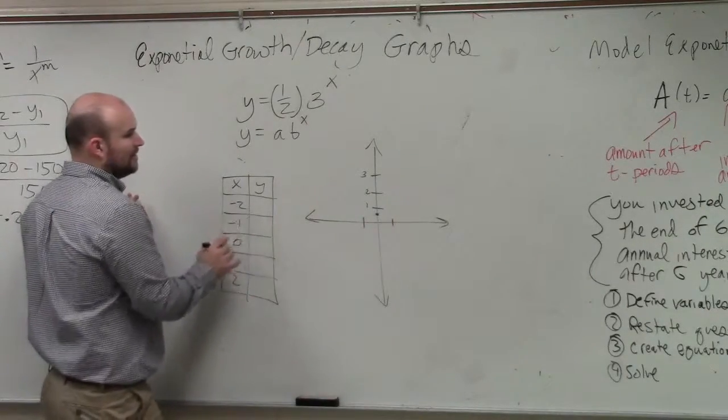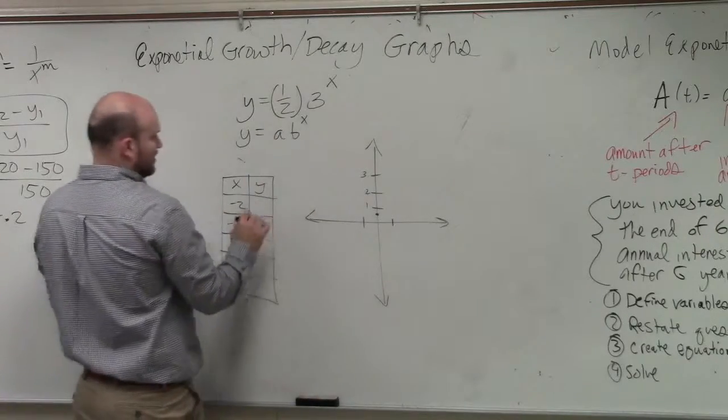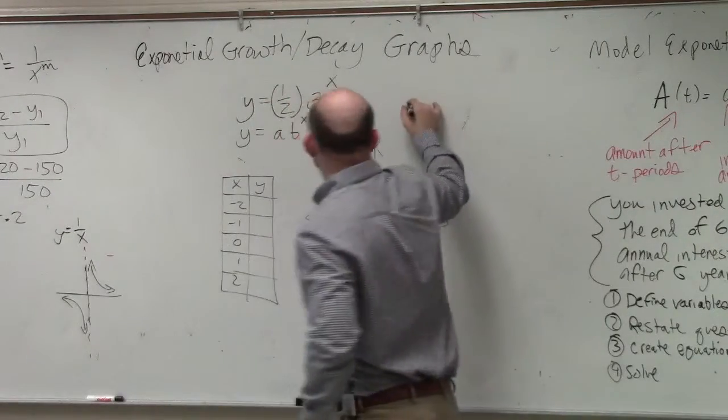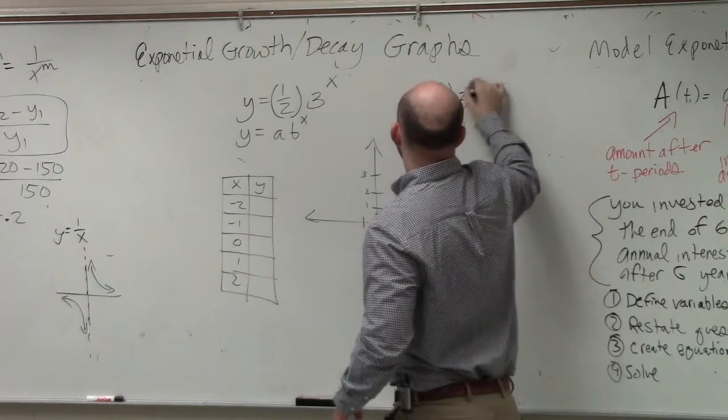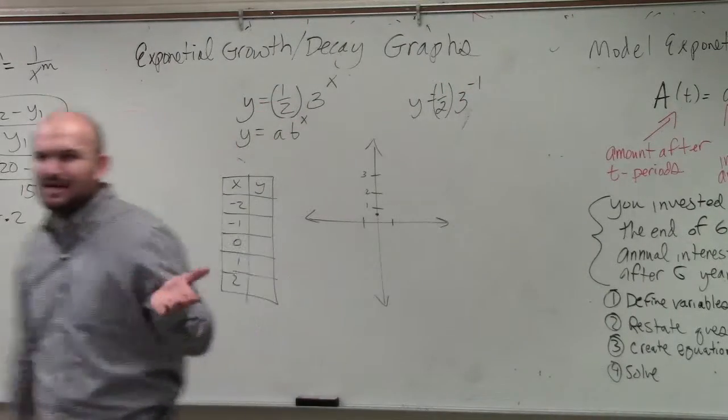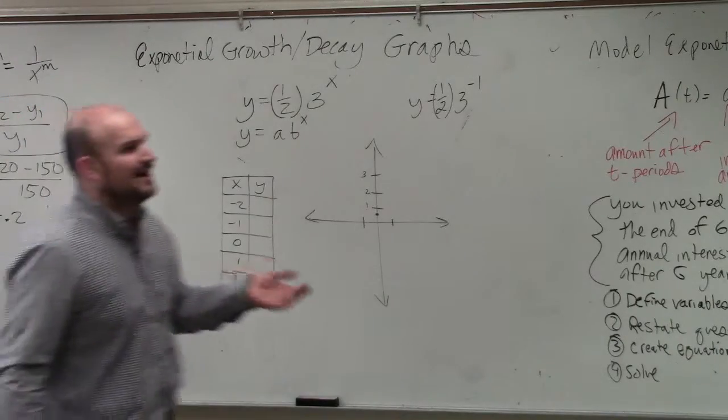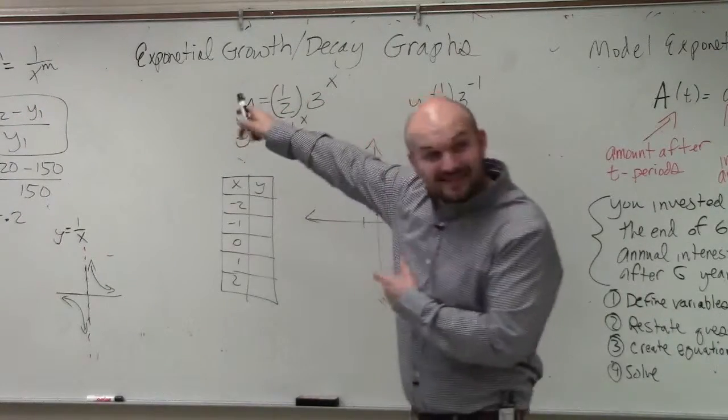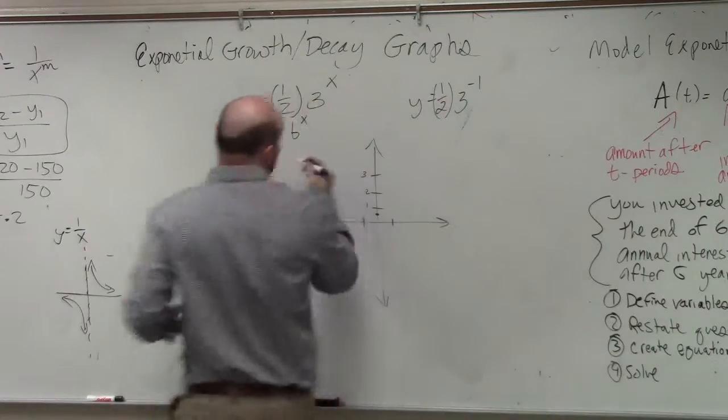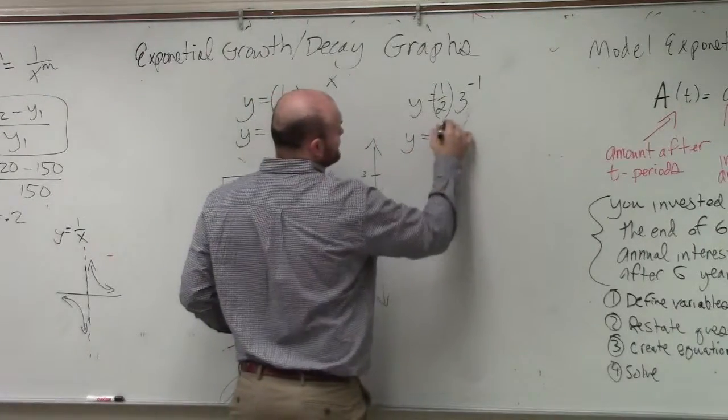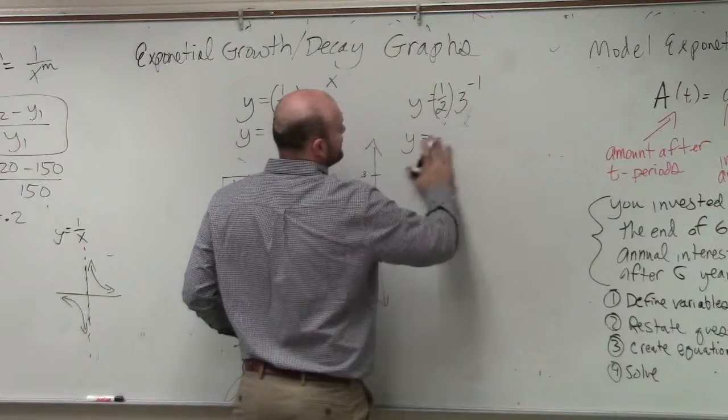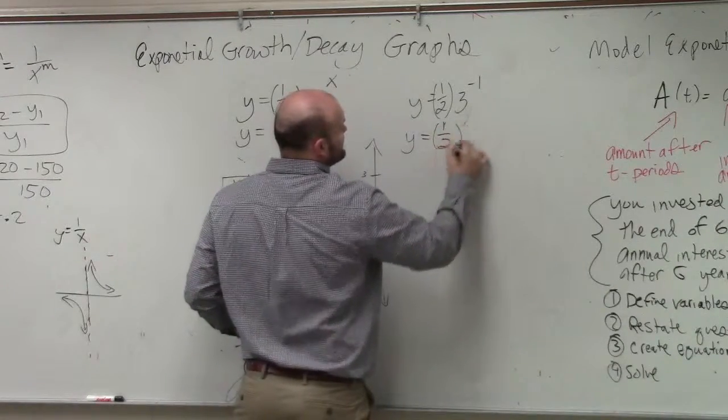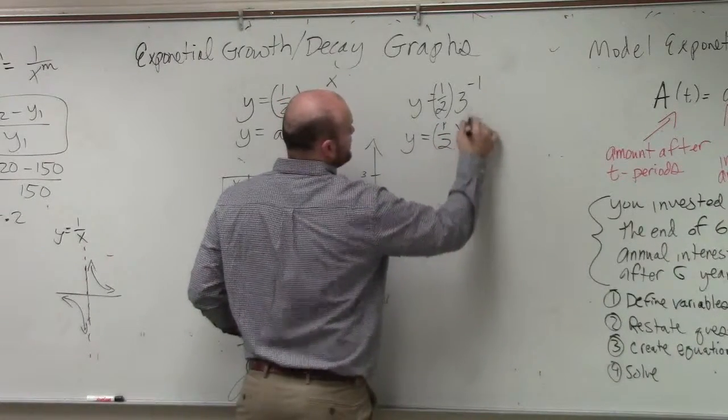OK. So when I plug in 1, or let's plug in negative 1 first. So if I do y equals 1 half times 3 to the negative 1. Does anybody remember how to write a negative exponent as a positive exponent? I might have even written it on the board so you guys can see. You can put it into the denominator, right? So therefore, I can rewrite this as—or sorry—so it's 1 half times 1 over 3 to the first power.